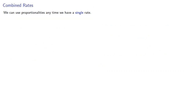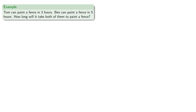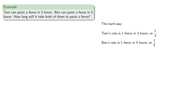We can use proportionalities any time we have a single rate, but sometimes there's more than one rate involved. If there's more than one rate, we need to combine them, and there are two ways of doing this. For example, suppose Tom can paint a fence in three hours while Ben can paint a fence in five hours. How long will it take both of them to paint a fence? The hard way is to note that Tom's rate is one-third and Ben's rate is one-fifth, so their combined rate will be one-third plus one-fifth, which is eight-fifteenths.